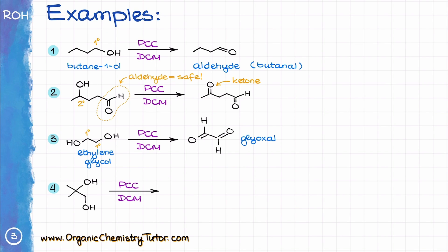And finally, in my last example, I have a tertiary alcohol and a primary alcohol in the same molecule. Since the tertiary alcohol cannot be oxidized any further, we'll leave it as is. The primary alcohol functional group, however, will give us the corresponding aldehyde. So as you can see, PCC is an excellent oxidizing agent. Its main drawback is chromium toxicity and some workup issues you will run into when performing this reaction in the lab.